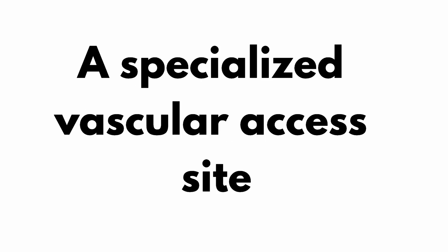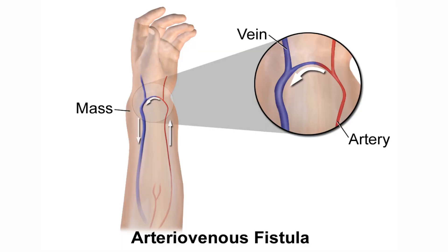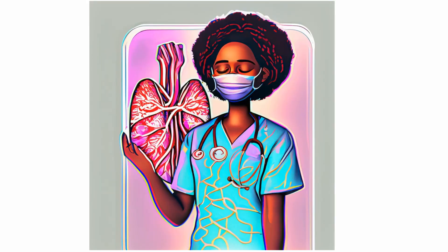To initiate hemodialysis, we first need to create a specialized vascular access site. This allows us to connect the patient to the dialysis machine. The most common one is an AV fistula in CKD patients. It's crucial for patients to consult a vascular surgeon about six months before they start dialysis to plan for this access site.